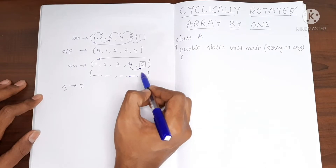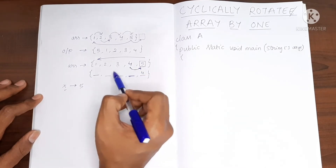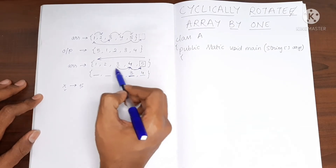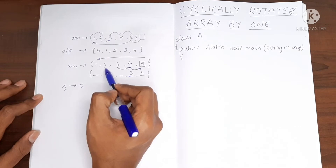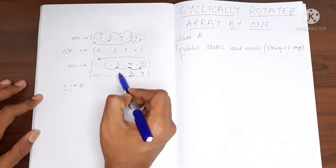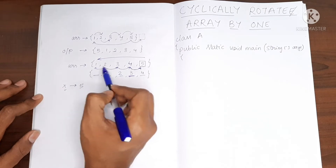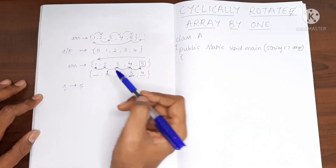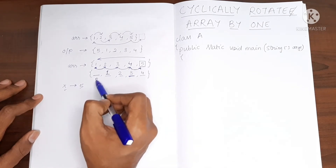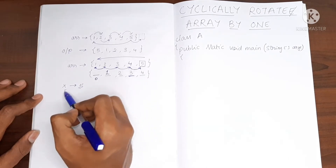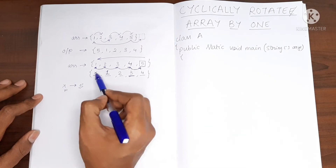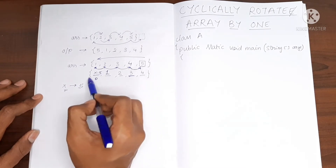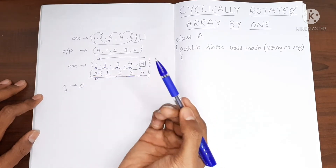So if I put 4 over here, it will be like this. Now I move to the next location and take this 3 and put it over here. Then I move to the previous location and move this 2 over here. Then I take this 1 and put it over here. When I reach index number 0, I take the value present in x, which is 5, and put it there. So we have got our required output.